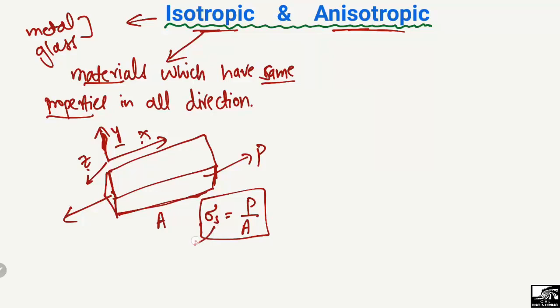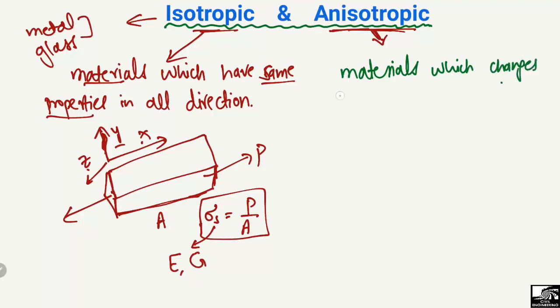It may also have other properties — not only strength, but also Young's modulus E, the shear modulus, and other properties — but all these properties will be the same in all directions. Now, looking at anisotropic materials, these are materials which change their properties with direction.